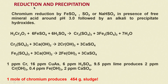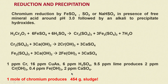For one mole of chromium requiring disposal, 454 grams of sludge must be produced. If several tons of chromium must be disposed of, the sludge quantity becomes enormous. If not disposed of properly, it seriously affects the environment, the soil in which it is deposited, and the water into which it seeps.